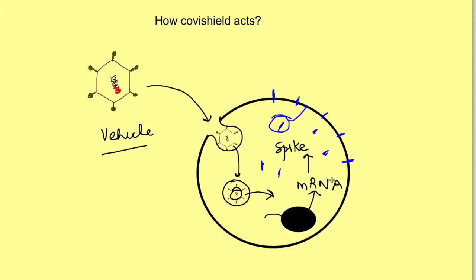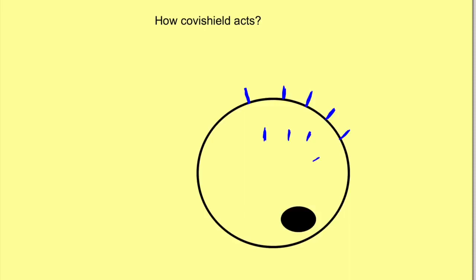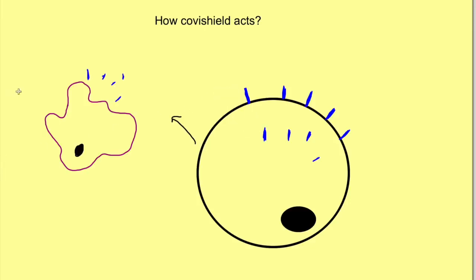Once these spike proteins are expressed on the surface of the cell, two things happen. First, the cells express the protein on their surface, and secondly, once these cells die, they release these proteins into the environment. These released proteins are then recognized by other cells of our body — macrophages — which engulf the fragments of these antigens, that is the spike protein.